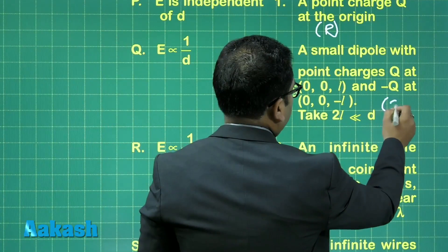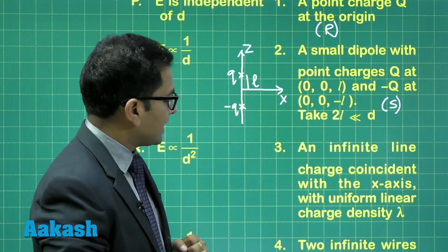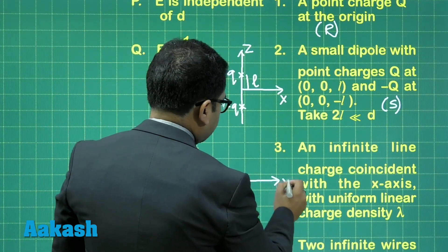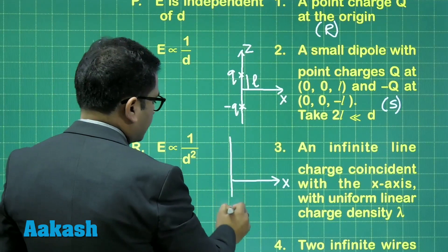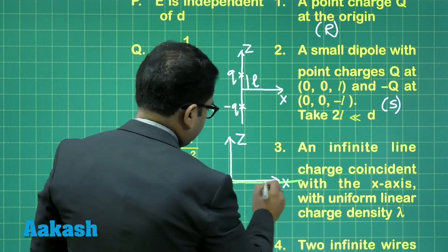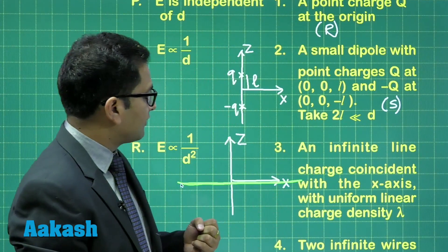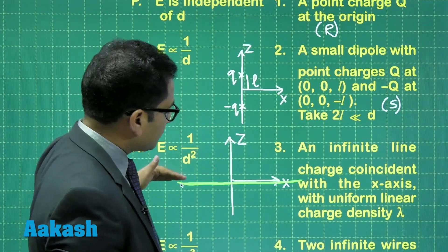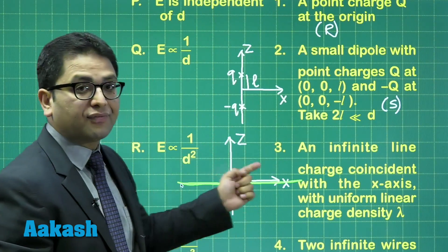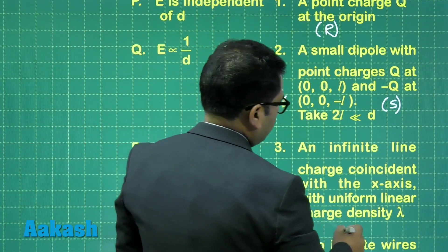Next, an infinite line charge coincident with the X-axis with uniform linear charge density. Taking the same coordinate setup — X along the line, Z-axis vertical — this is the line charge along the X-axis. We need the electric field at point (0, 0, D), which is at perpendicular distance D from the line charge. The electric field due to a line charge is inversely proportional to D, which corresponds to option Q.